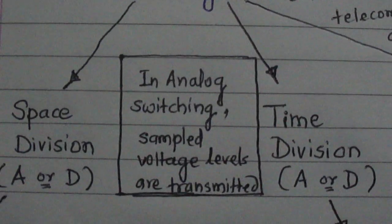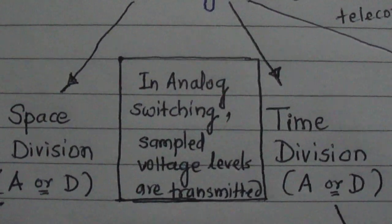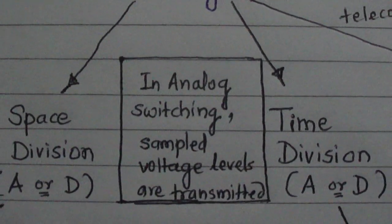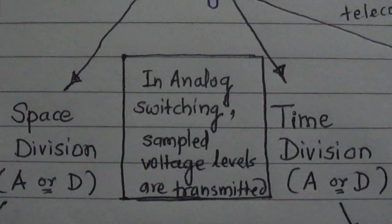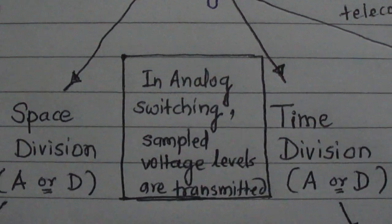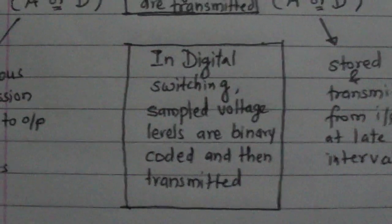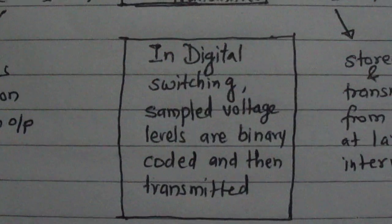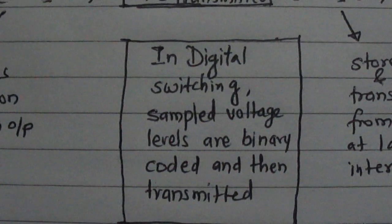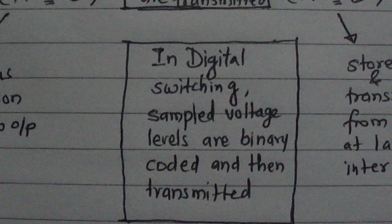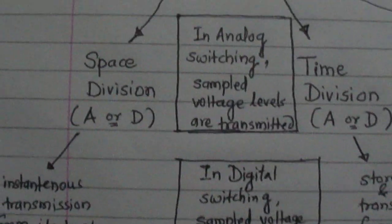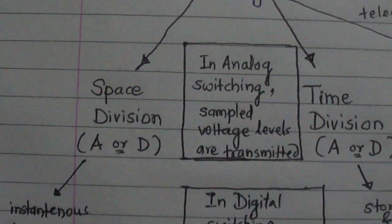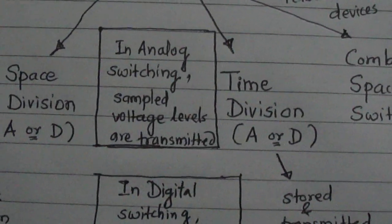In analog switching, sample voltage levels are transmitted only — they are not converted into digital bits. In digital switching, sampled voltage levels are binary coded and then transmitted. This is the basic difference between analog and digital switching, whether it is space division or time division.